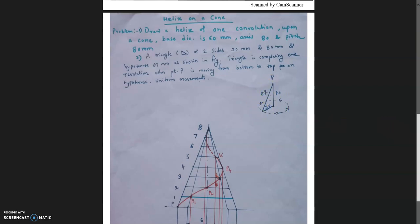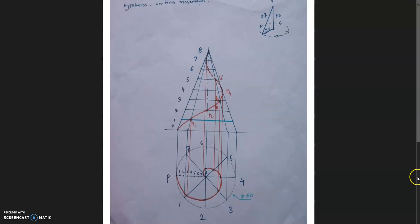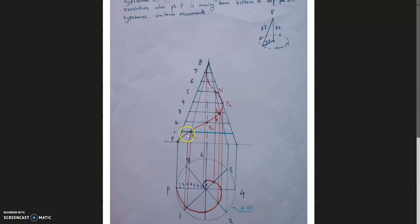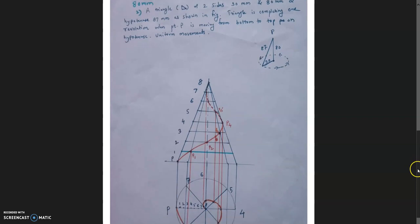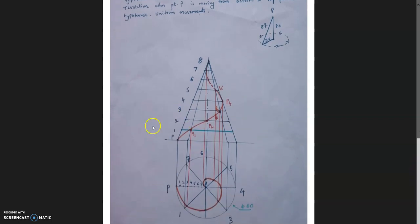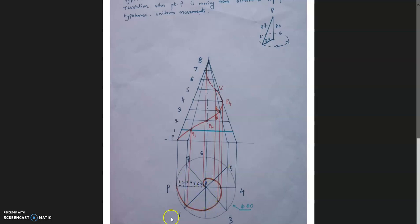The circle has 60 mm diameter — this is the base of the cone. The axis height is 80 mm. Instead of dividing into 12 parts, to avoid complexity I have divided into 8 parts. The radius is divided into 8 equal parts: 1, 2, 3, 4, 5, 6, 7, 8. The circle is also divided into 8 equal parts, so each angle is 45 degrees, giving 360 degrees total.